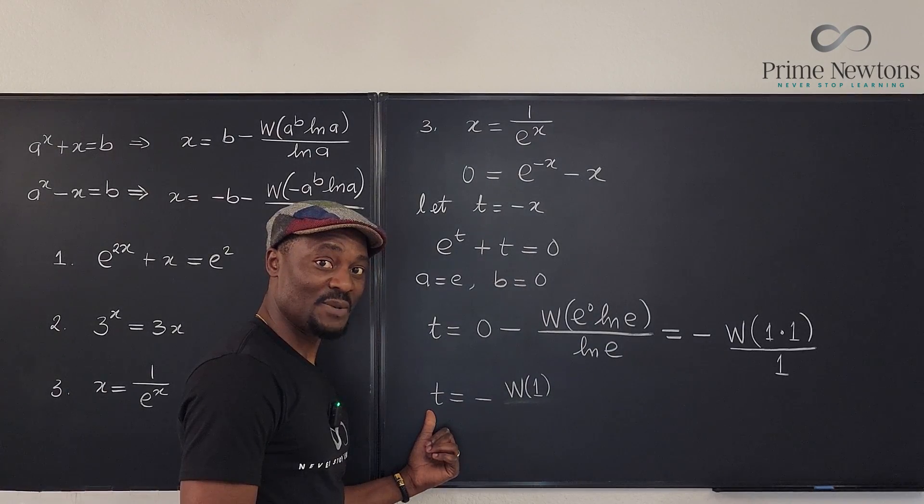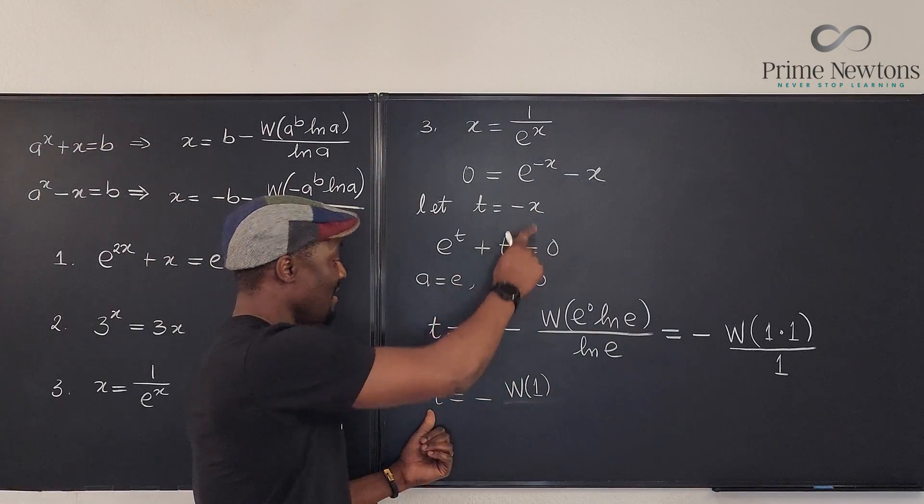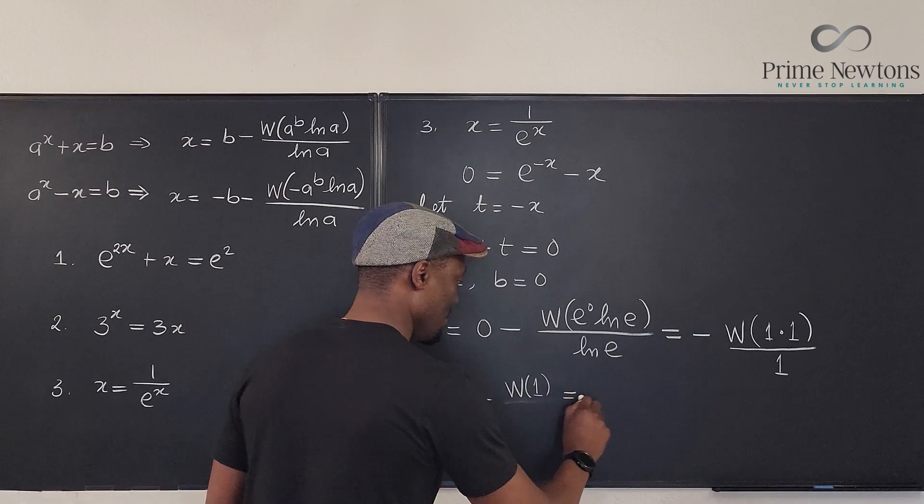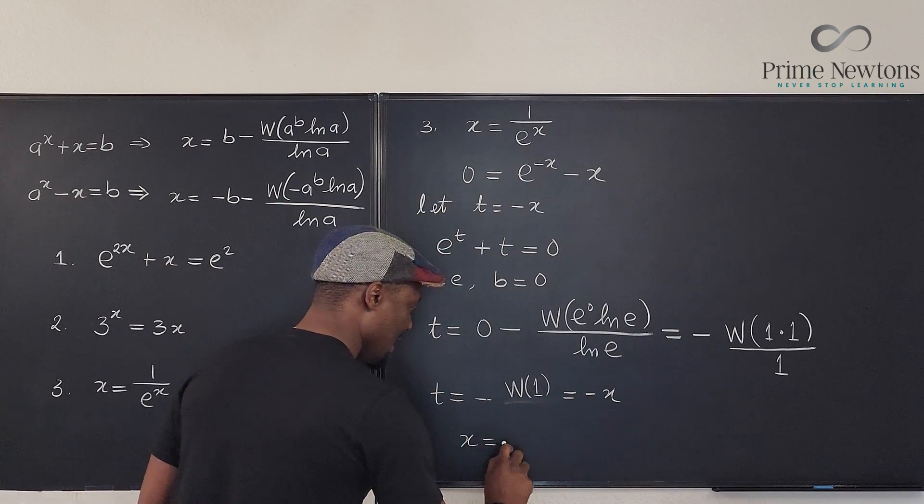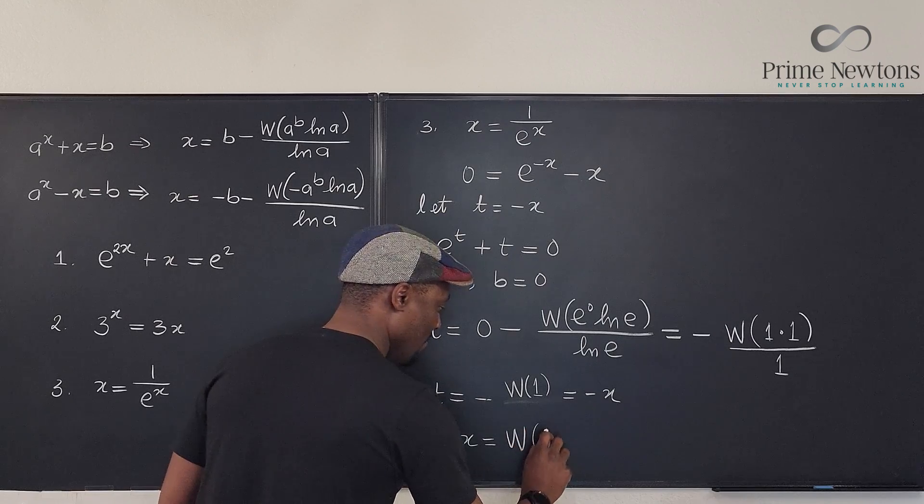But what did we say t was? We said t is negative x. So, which is equal to negative x? So, if we cancel both negatives, it clearly says x is the w of one.